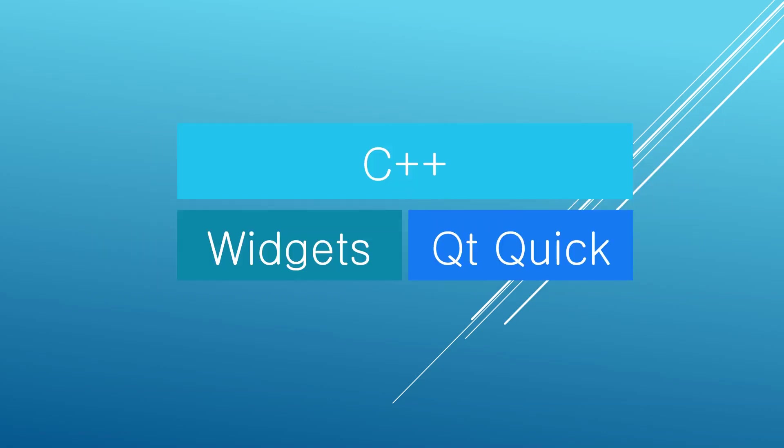You may already know that Qt is a cross-platform application development framework you can use to develop applications for Windows, Mac, Linux, Android, iOS and embedded devices. It is developed in C++ but it offers two APIs you can use to develop graphical user interfaces.